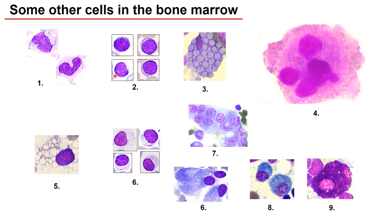The next batch of cells — labeled with two and six — are similar cells, except the first four at number two: they have about the same size as the red blood cells, the nucleus almost fills up the whole cell, with a very narrow and blue cytoplasm. While the other one is about double the size of the red blood cells and has a bigger cytoplasm with some tiny granules. These are lymphocytes — number two labeled as small lymphocyte and number six as large lymphocytes.